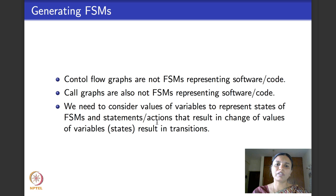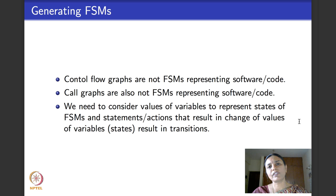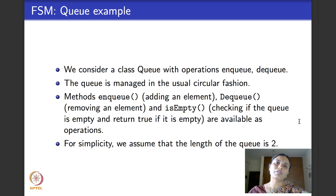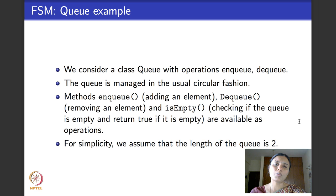Similarly, call graphs are also not really finite state machines because they don't depict data associated with states. When we define finite state machines, we need to consider values of variables present in the code. Each state of a finite state machine can be thought of as a tuple containing the values of the designated set of variables at a specified point in time, and transitions tell you how when a statement executes, the values of one or more variables change, affecting these transitions.